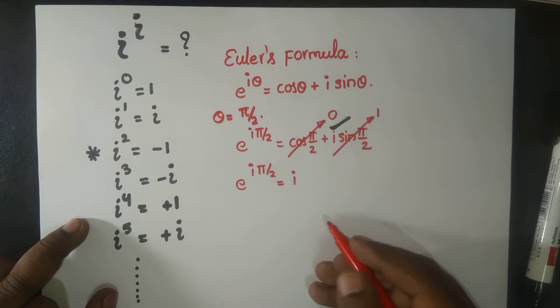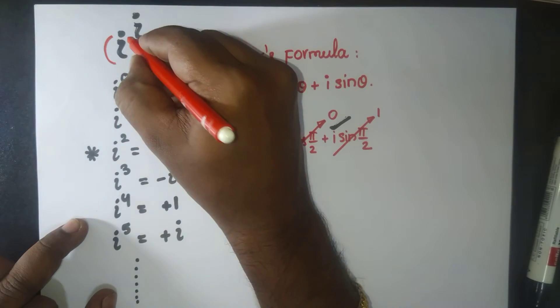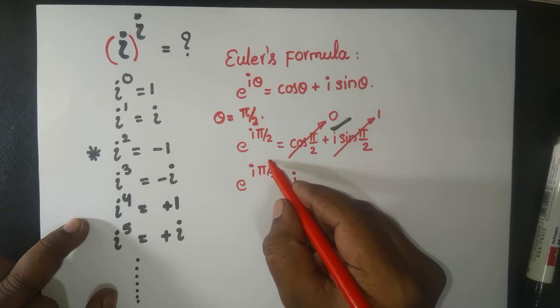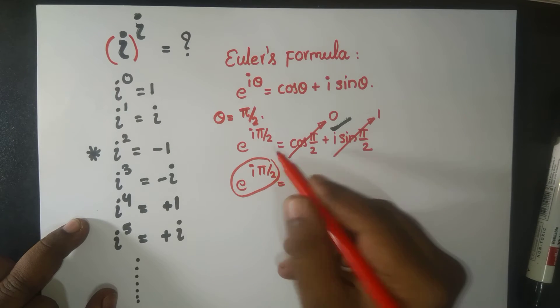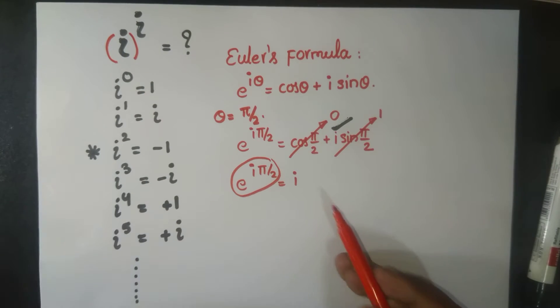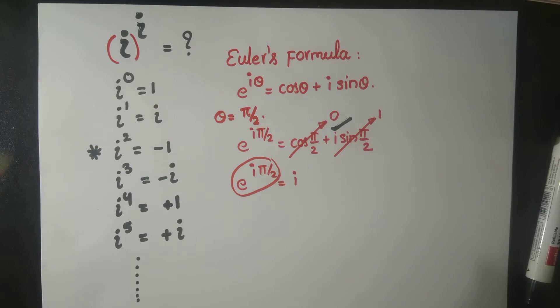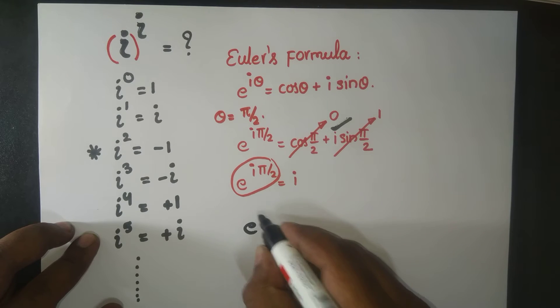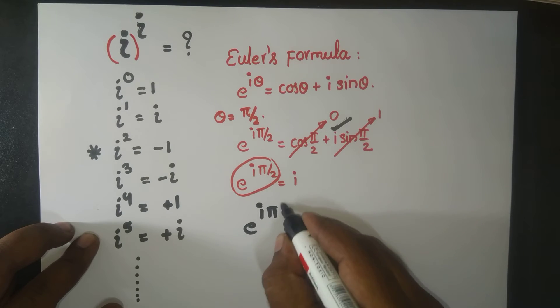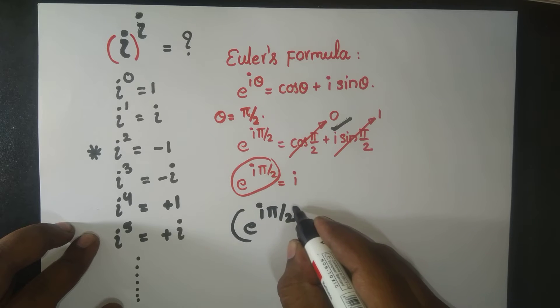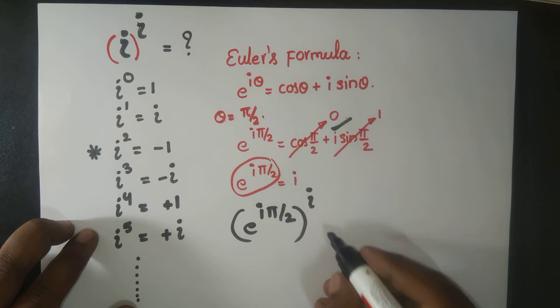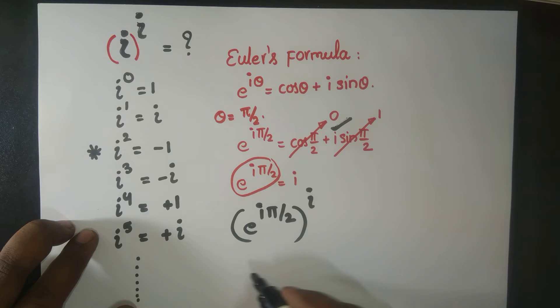So e^(i·π/2) is positive i. That means you come here and this i, you plug in this. So you plug in e^(i·π/2) in this i. So now we can construct something like this. Therefore, e^(i·π/2) raised to the power of i again.